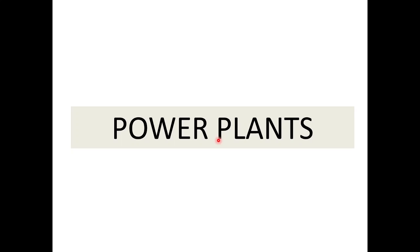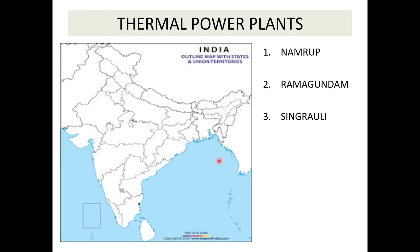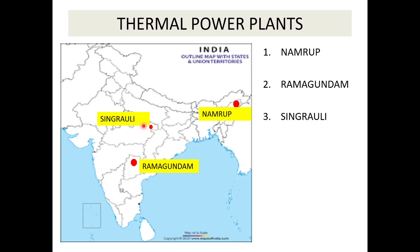Now we talk about power plants. Thermal power plants use coal or fossil fuel to generate power. As mentioned, 80% of electricity is coal-produced. The important thermal power plants are: Namrup, Ramagundam - Telangana, and Singrauli - Madhya Pradesh.